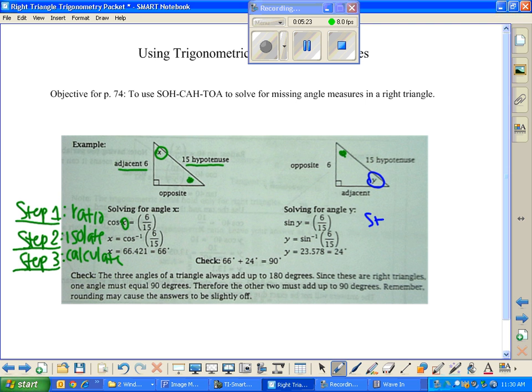First step, again, step one, setting up that ratio. We realize we have something opposite of our angle. We realize we have the hypotenuse. That leaves us with sine. We have to use sine. If we tried to use cosine, we'd have adjacent over hypotenuse, but we don't even have a value for adjacent. So we can't use it. That's why we're stuck using sine.